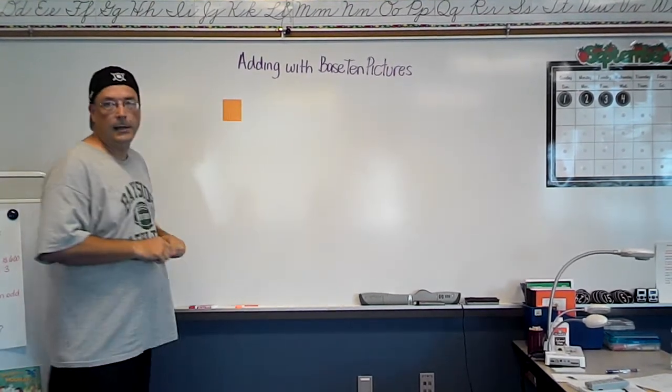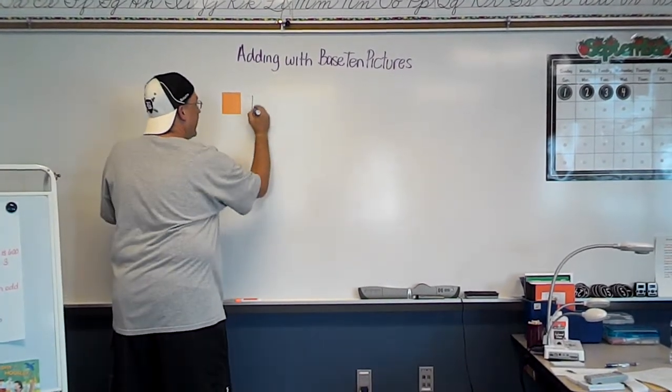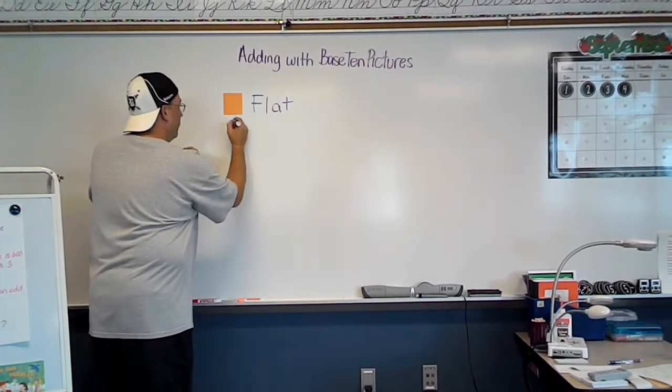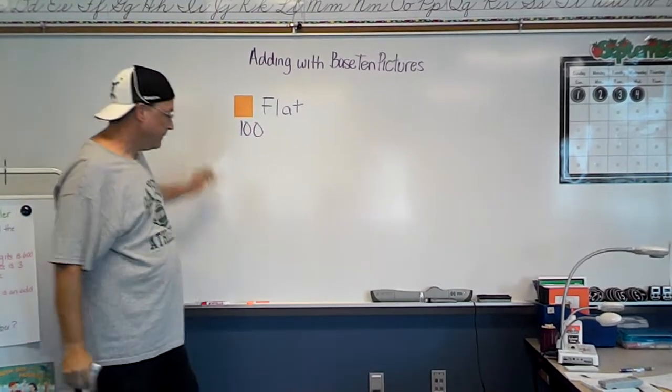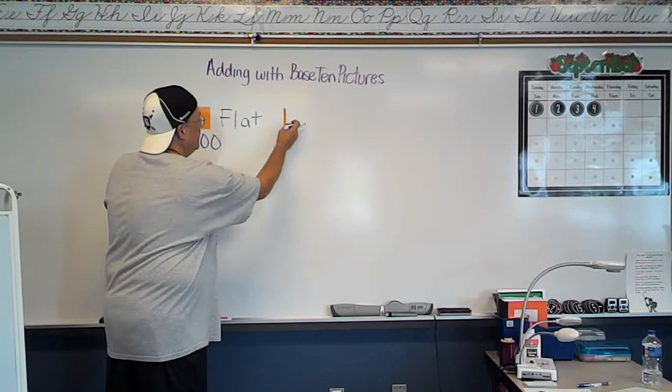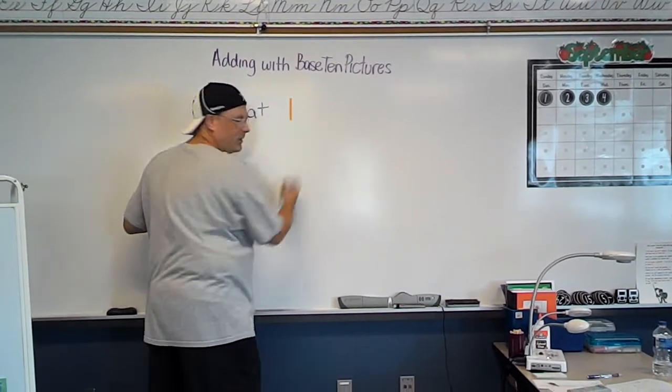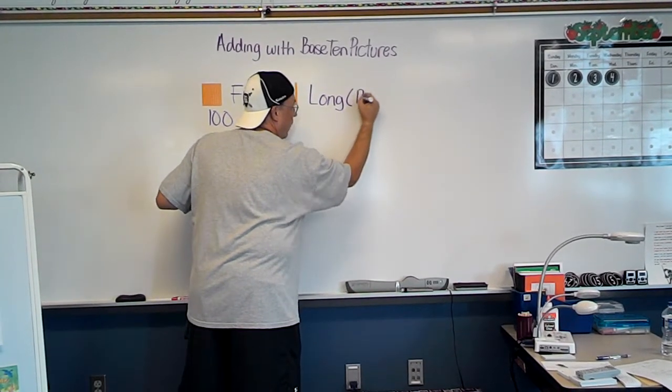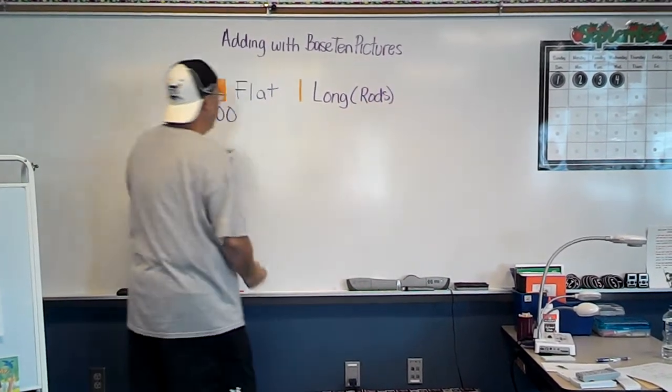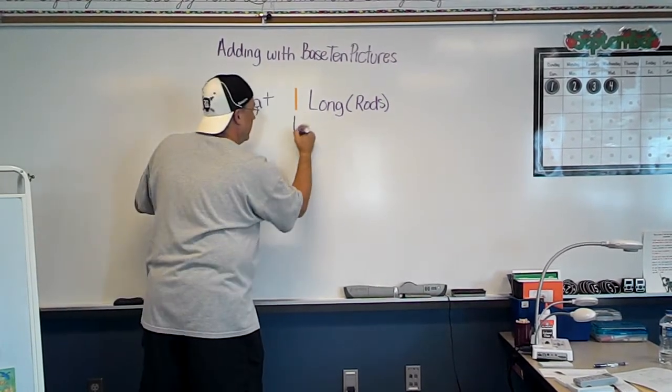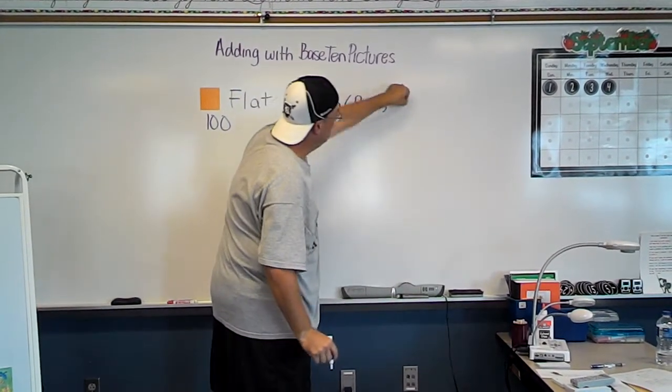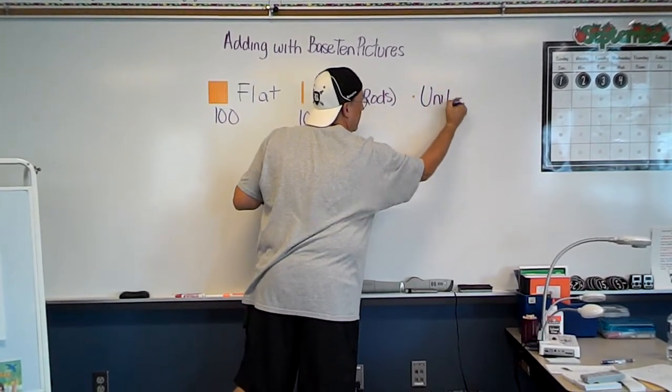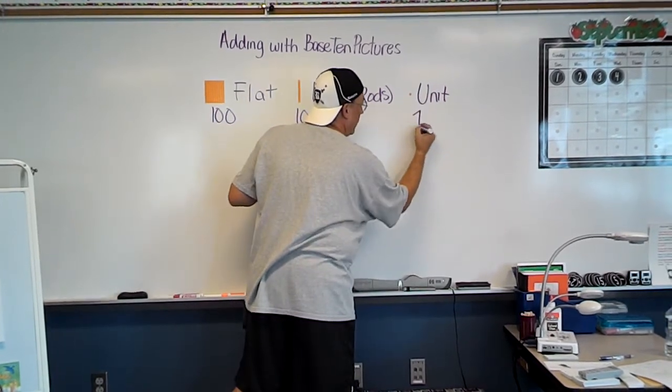This first one, boys and girls, is called a flat, and that has a value of 100. Our next picture that we're going to see is a long, and it looks like that, like a stick. We're going to call that a long. Some of you may know it by rods, and that has a value of 10. And our last picture is that little guy right there. We call that a unit, or ones, and it has a value of 1.